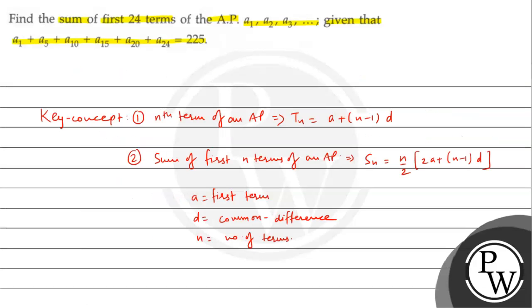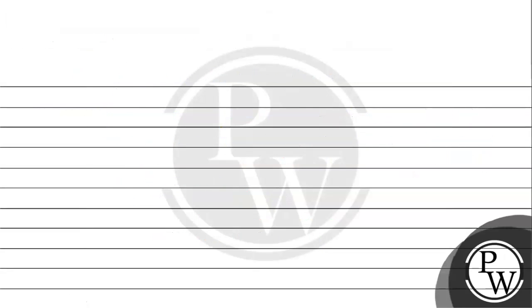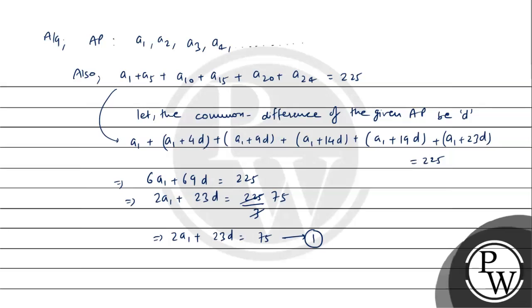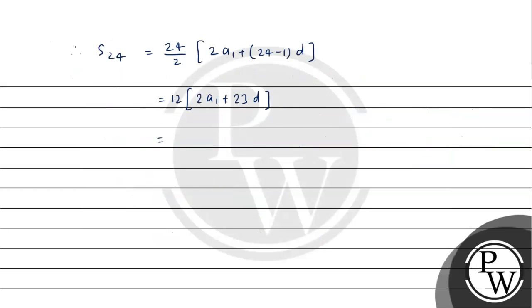Ab question mein kya nikalna hai? First 24 terms ka sum nikalna hai. Toh S24 = 24 by 2 into (2A1 plus (24 minus 1) into D) = 12 times (2A1 plus 23D). Ab equation 1 se 2A1 plus 23D ki value 75 hai. Toh S24 = 12 into 75 = 900.